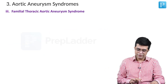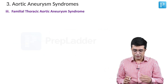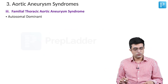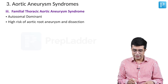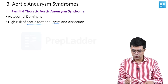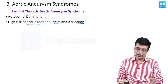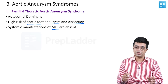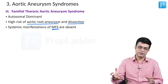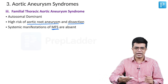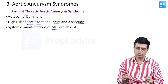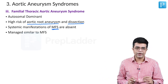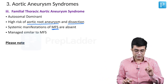The third aortic aneurysm syndrome is familial thoracic aortic aneurysm syndrome. It is an autosomal dominant condition with high risk of aortic root aneurysm and dissection. Patients may or may not have marfanoid habitus; systemic features of Marfan syndrome other than habitus — internal features and vertebral anomalies — are usually absent. Management is similar to Marfan syndrome.